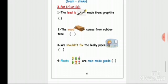Question number two: the wood comes from a rubber tree. No - wrong. I can't get wood from a rubber tree. The wood comes from a tree. Number two is wrong.